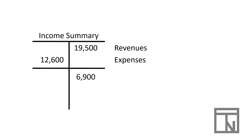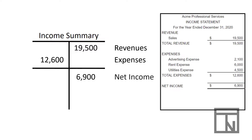Part of the reason we dump everything into Income Summary and then into capital, rather than directly, is because this subtotal can be compared to the net income on the income statement — which is just revenues minus expenses. This lets us double-check our number before closing to capital. It also keeps the capital account cleaner, with only a single entry of net income's total, giving us better reporting when we close the books.